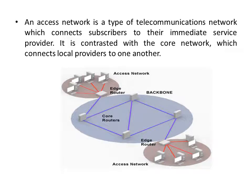In this diagram, access network is a type of telecommunication network which connects subscribers to their immediate service provider. It is contrasted with the core network, which connects local providers to one another. There are three circles — two circles represent the access network which interconnects all the subscribers to the immediate service provider. All the nodes are connected and are able to access the service provider through the access network, which is then connected to the core or backbone network. The backbone has core routers, but edge routers are used to connect the backbone network to the access network.